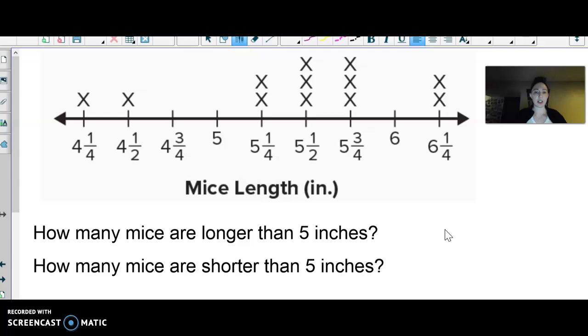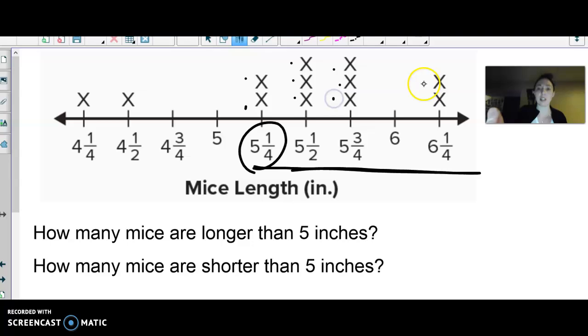And then how many mice are longer than five inches? And how many mice are shorter than five inches? Go ahead and figure it out. Alright, hopefully you're seeing that these are not too tricky to interpret if you take a minute and you look at them. So how many mice are longer? Well, this is longer. All these data or measurements are longer. So we have one, two, three, four, five, six, seven, eight, nine, ten mice were longer than five inches. Shorter than five inches, we have two mice over there that are shorter than five inches. Again, looking at it, thinking about it, taking the time to really study it, and hopefully you're understanding how to read it. If you're not, make sure you are asking questions.